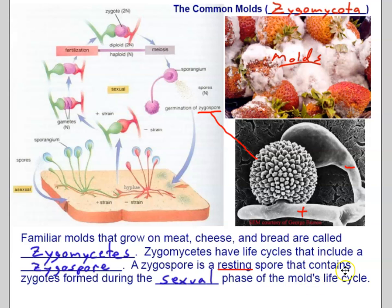Before moving on, there was a mistake on the slide that I've corrected: at one point I thought the zygospore contained only one zygote, but it actually contains many zygotes — many zygote nuclei.